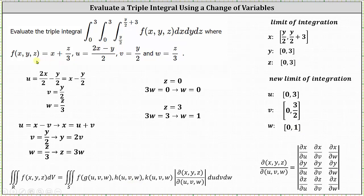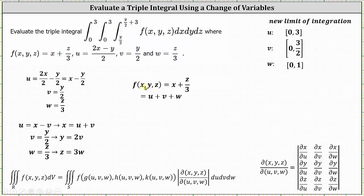Next, we'll write the function f(x, y, z) in terms of u, v, and w. We know f(x, y, z) equals x plus z divided by three. We also know x equals u plus v, and z divided by three equals w, which gives us a new function f equals u plus v plus w.